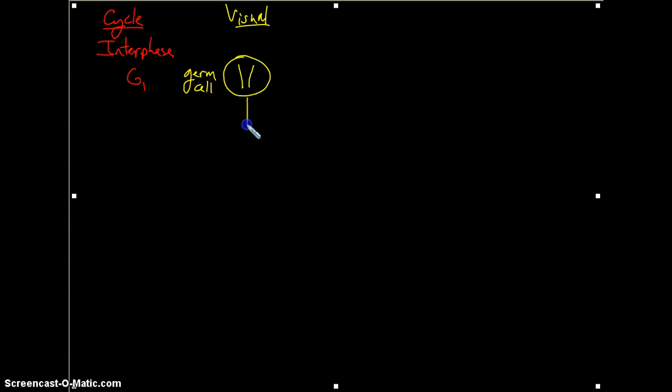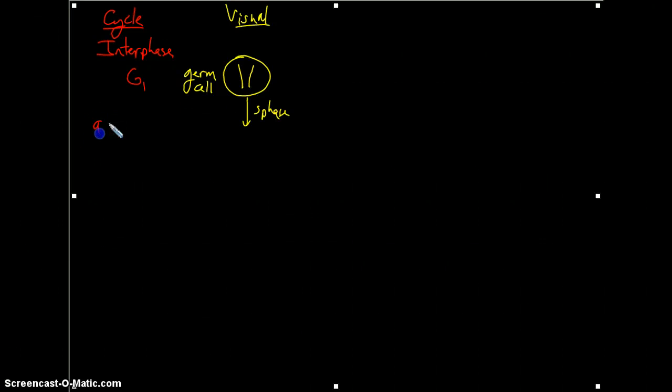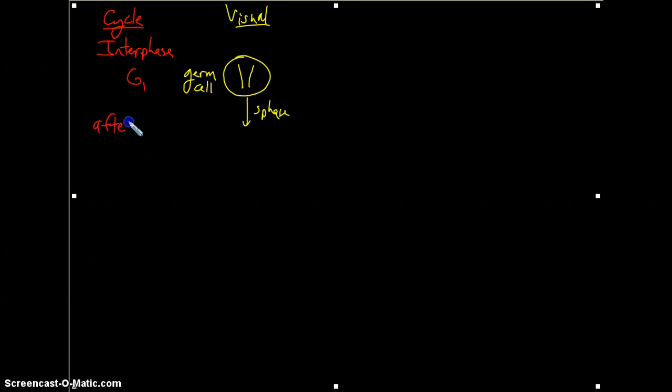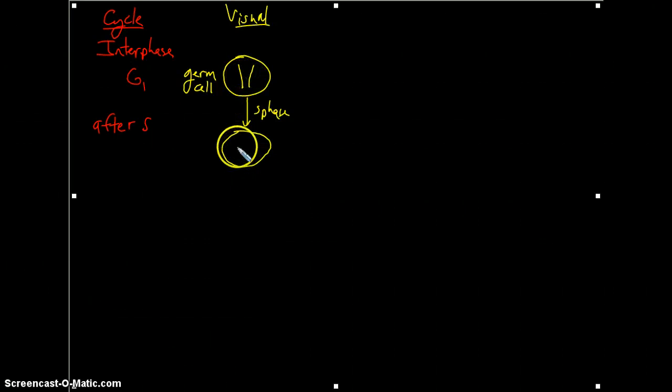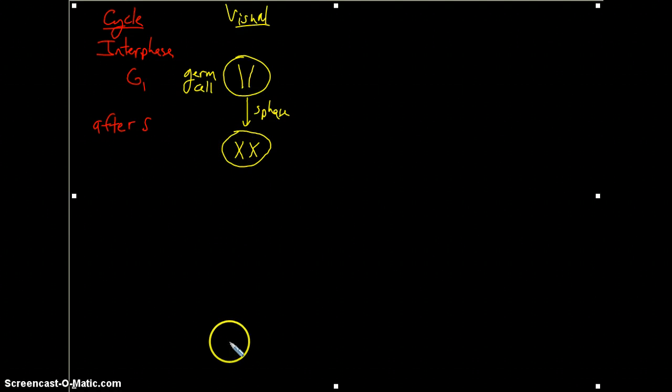Now this cell will undergo S phase. So we'll draw in what happens or what we'll see after S phase. And what we notice is that you go from these two unreplicated chromosomes to two replicated chromosomes. To synthesize means to create, so you're creating copies of that genetic information.